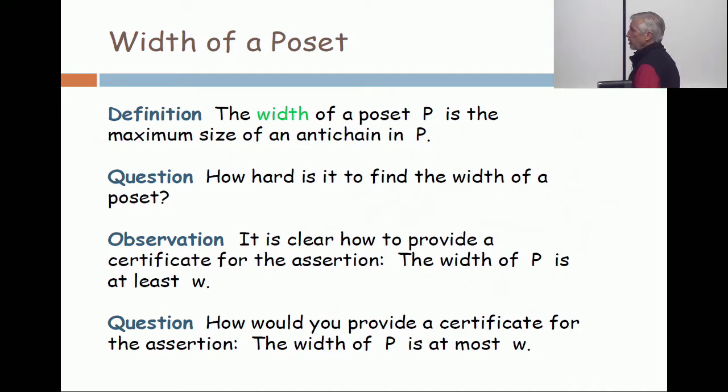We observe the dual statements. It's clear how to provide a certificate for the assertion the width is at least something. You just simply provide an anti-chain of that size. But how do you provide a certificate for a statement of the form the width of P is at most W?